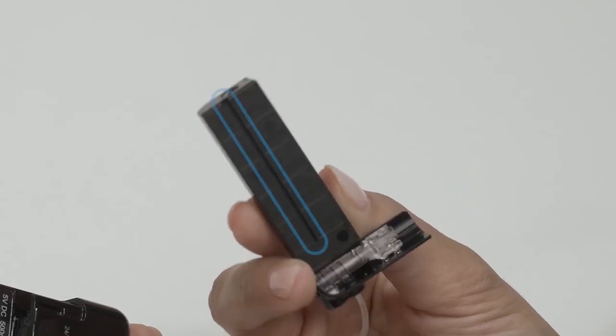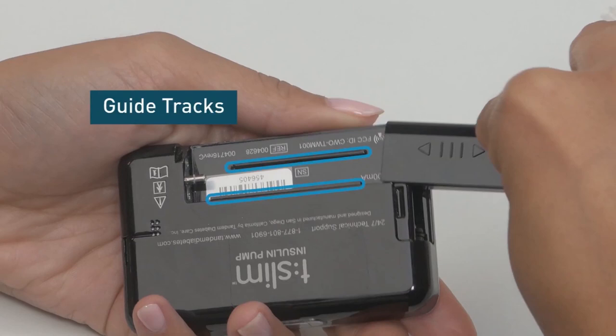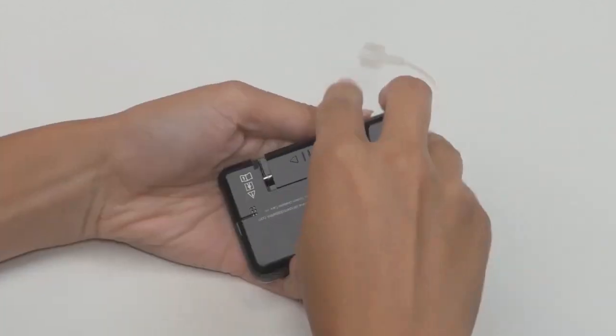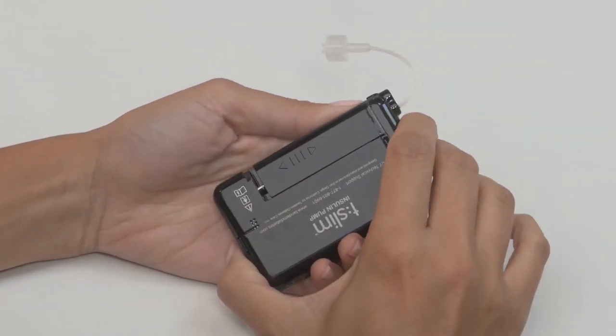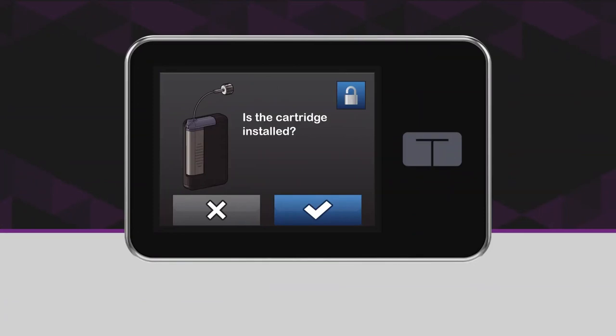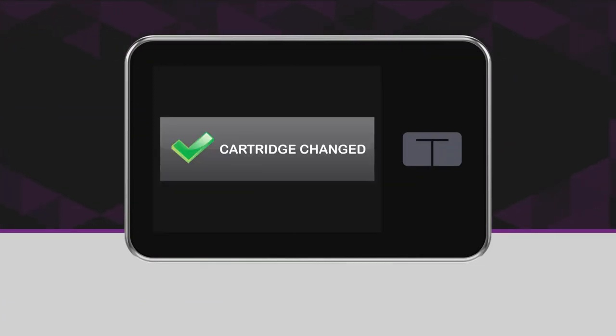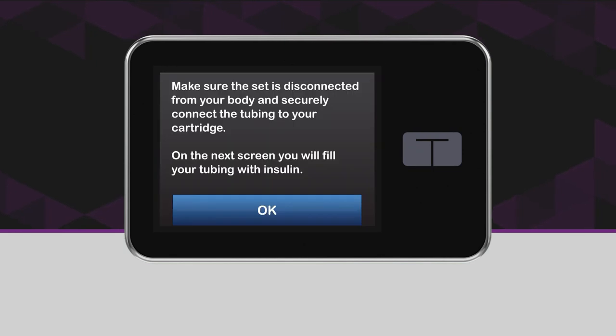Remove your used cartridge using the removal tool. You can also use a coin. Install your newly filled cartridge by placing the bottom edge at the end of the pump like this and lining up the grooves on either side of the cartridge with these guide tracks on the pump. Once lined up properly, push the cartridge on until you feel it click into place. The cartridge should fit smoothly against the pump. Your pump will take a few moments to detect the newly installed cartridge.